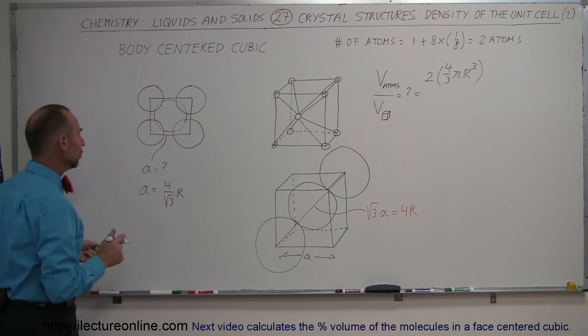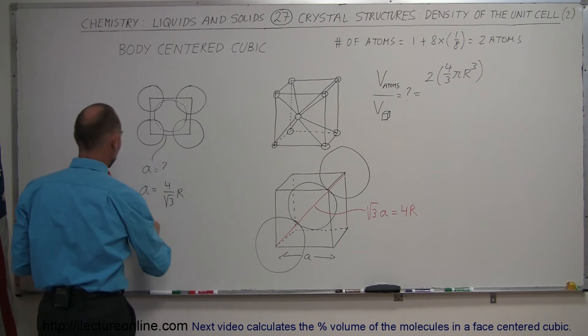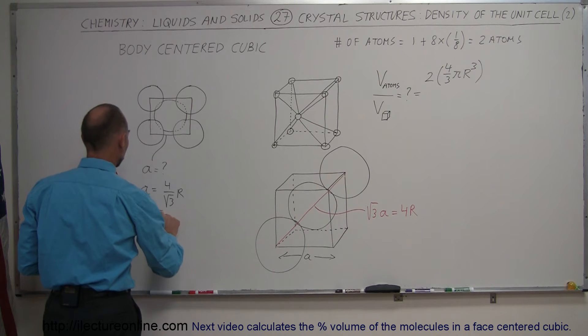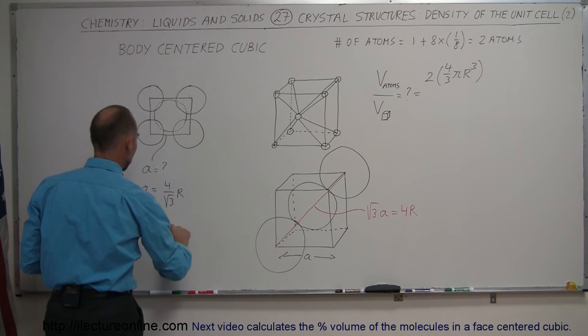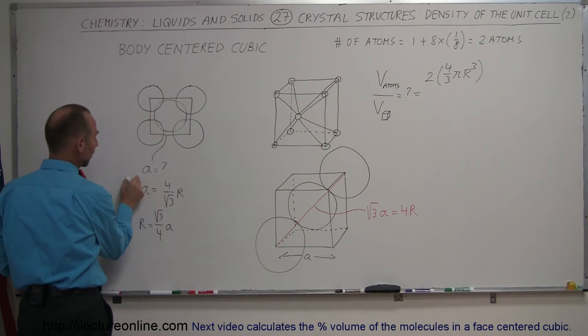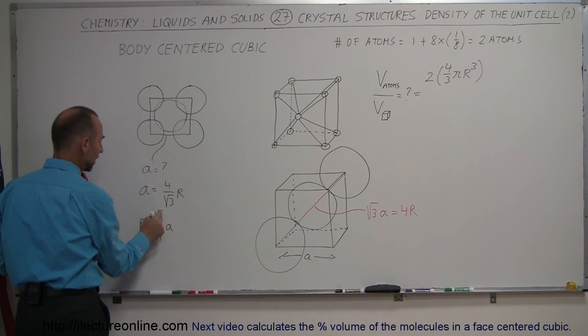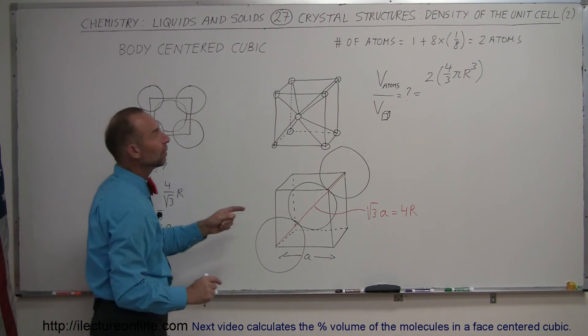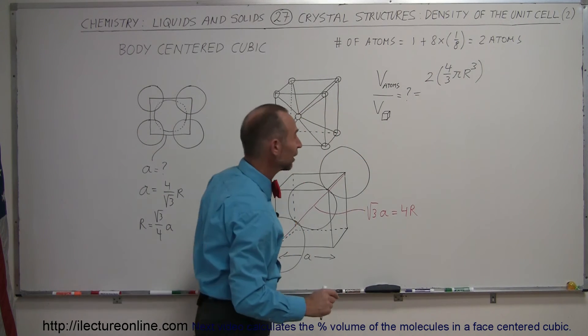Or we could replace r in terms of a. That might be a better thing to do. What we could do is rearrange this and say that r equals the square root of three divided by four times a. Simply by moving the square root of three up here and the four down here, we get r equals the square root of three divided by four times a. And that can be substituted in this equation.